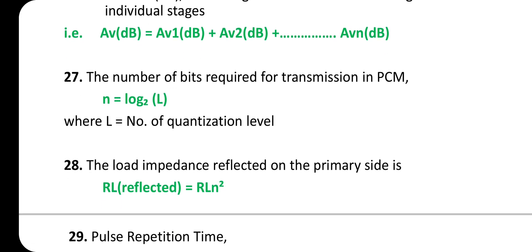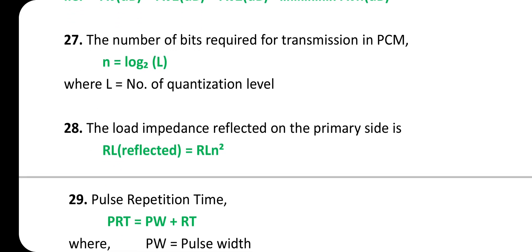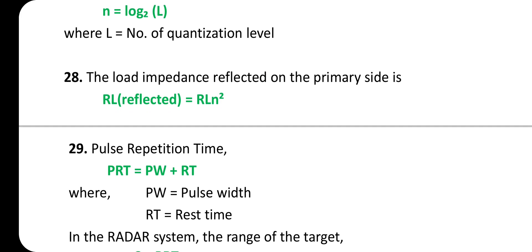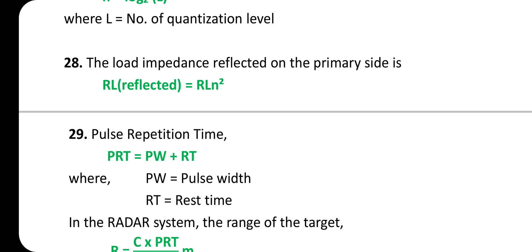The number of bits required for transmission in Pulse Code Modulation: n = log₂(L), where L is the number of quantization levels. The load impedance reflected to the primary side: R_L(reflected) = R_L × n².